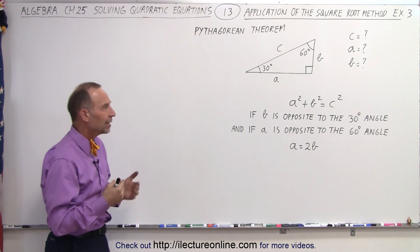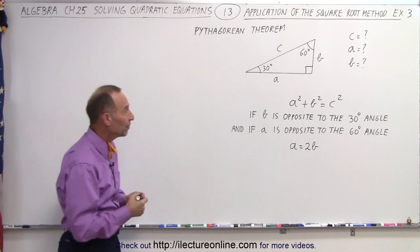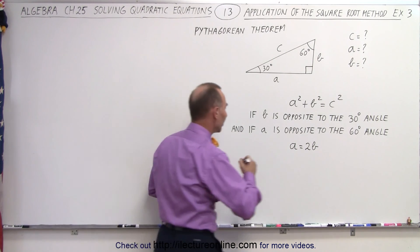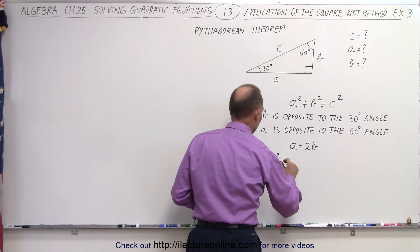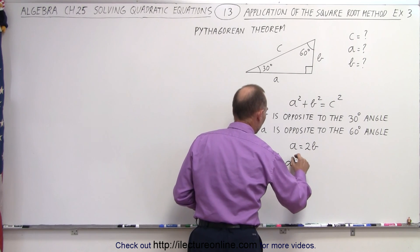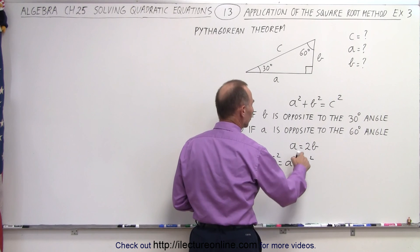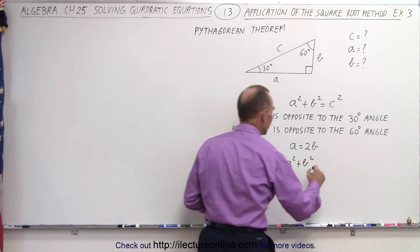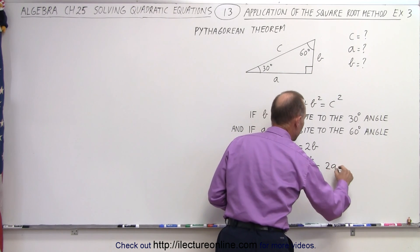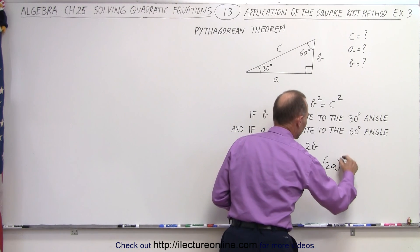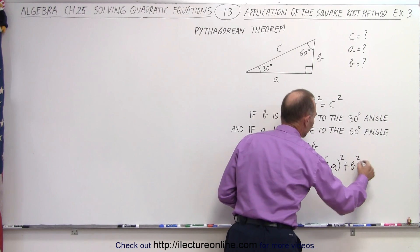With that in mind, let's calculate C, A, and B. So in this case, we can say that C squared is equal to A squared plus B squared. But since A is equal to 2 times B, this could be written as 2A quantity squared plus B squared.